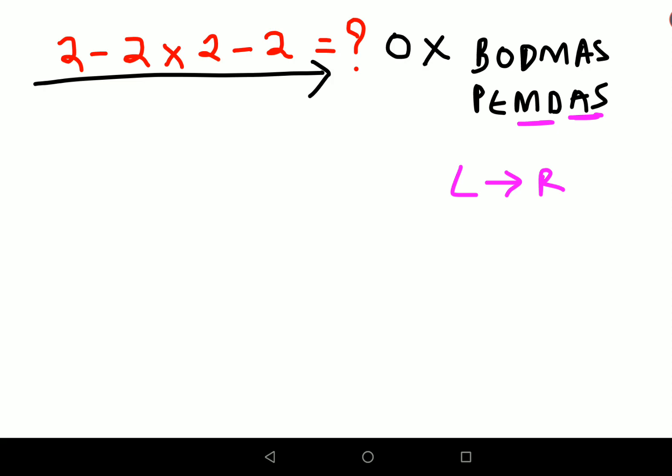So now what you have over here is 3 minus 2 into 2 minus 2. What you will do is write 3 minus as it is, then you will write 2 into 2 which is 4, then you will write minus 2. So this 3 minus 4 gets you minus 1.